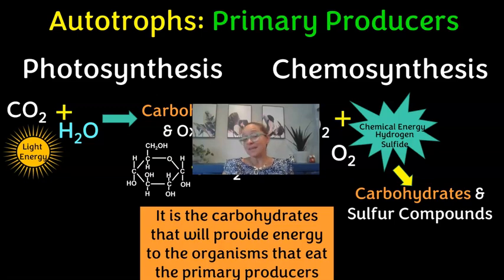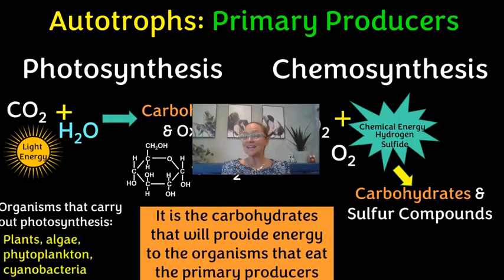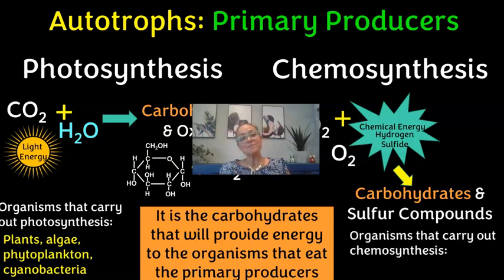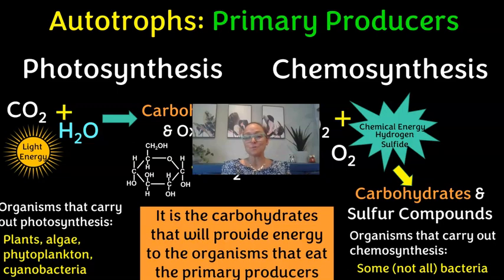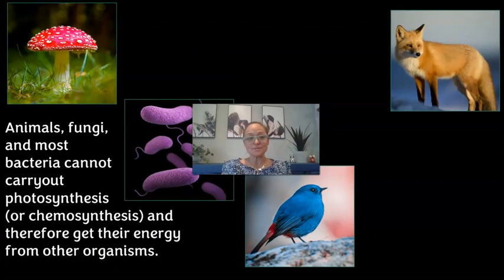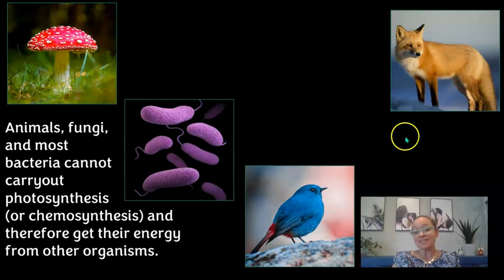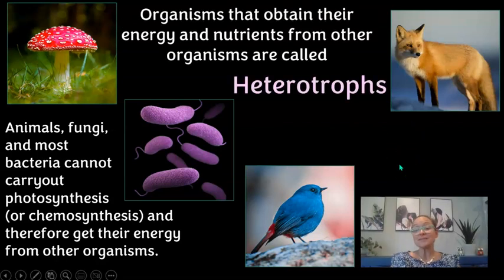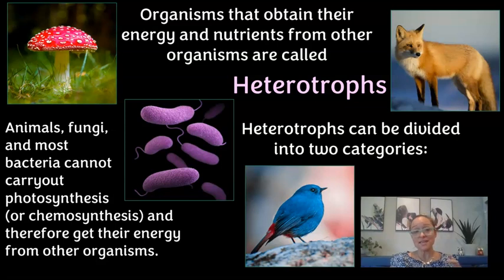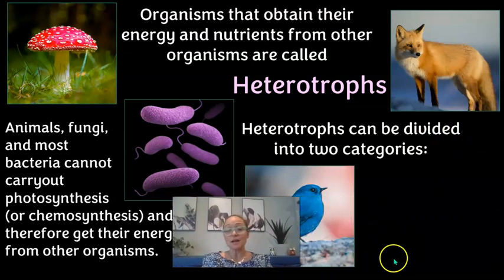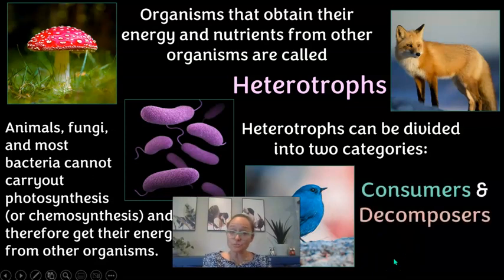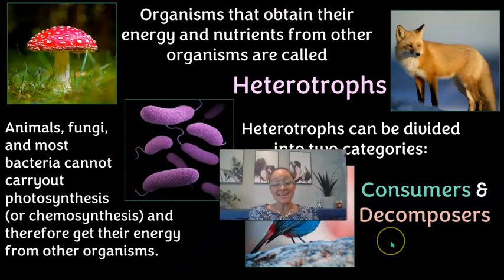Any organism that eats primary producers or autotrophs will have access to that stored energy. Photosynthetic organism examples include plants, algae, phytoplankton, and cyanobacteria. Chemosynthetic organisms are the bacteria living near hydrothermal vents. Not all organisms are autotrophs — animals, fungi, and most bacteria cannot carry out photosynthesis or chemosynthesis and therefore must get their energy from other organisms. These are called heterotrophs.